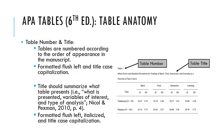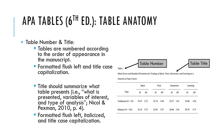Overall, APA tables are meant to be clean and simple. Tables enhance the reader's understanding of the data presented but should not hinder the data's meaning. The first parts of an APA table are the table's number and title. Tables are numbered according to the order of appearance in the manuscript and appear flush left at the top of the table, using title case capitalization.